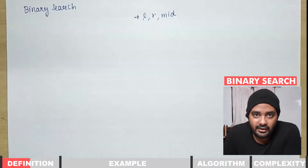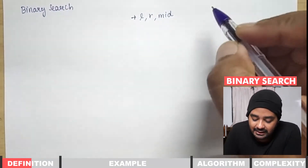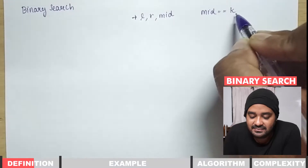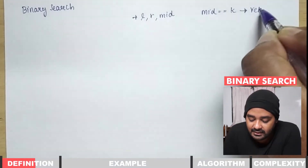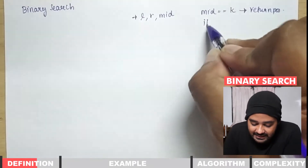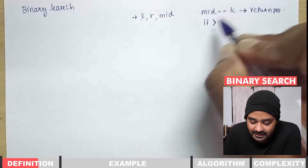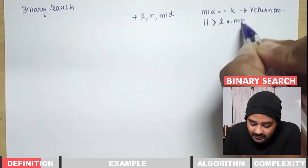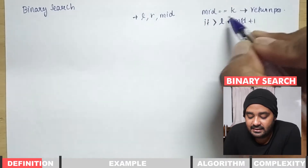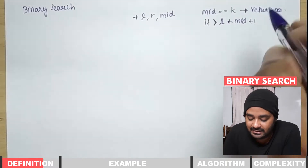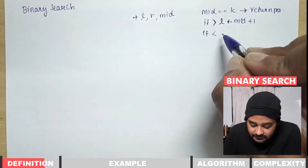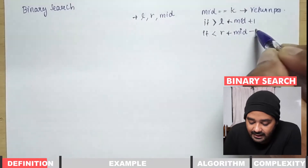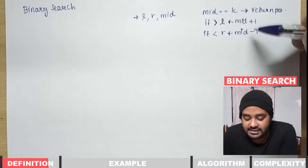These are the three important pointers. The conditions are: if the search key matches the mid element, we return its position. If the element is greater, we assign L with mid plus 1. If it is lesser, R is assigned with mid minus 1.